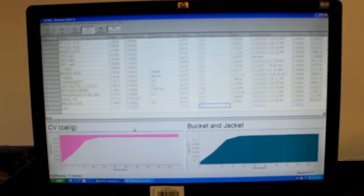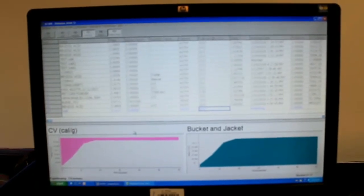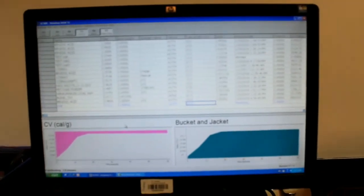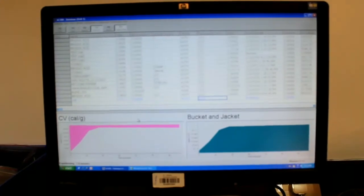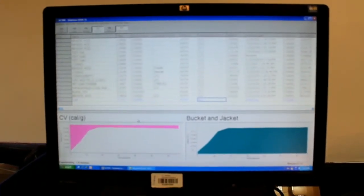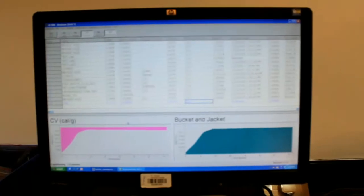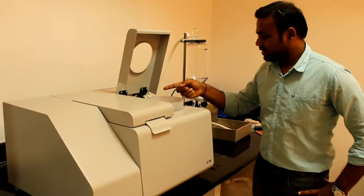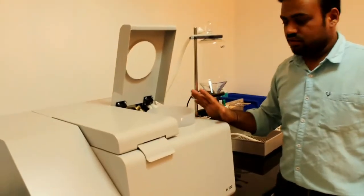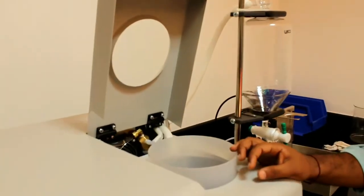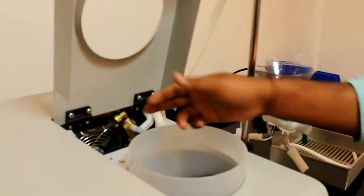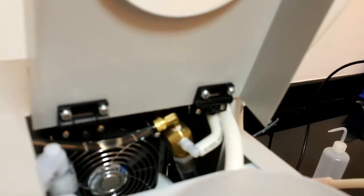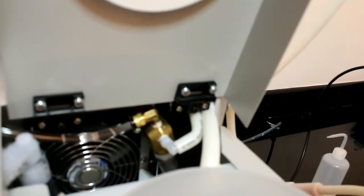See, now the temperature is matching. To match both the jacket and bucket temperature, we used heat exchanger. See, you can check here the heat exchanger. This is the heat exchanger of the instrument. Usually we call it as a chiller. Here we have heat exchanger. By using this heat exchanger, it matches both the temperature, jacket and bucket temperature.